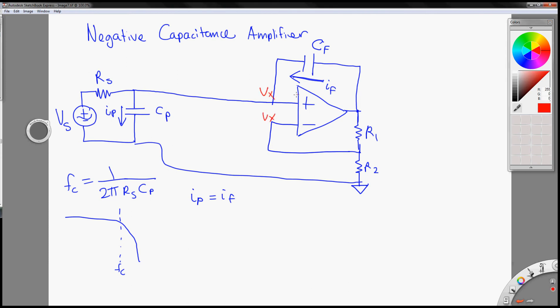Vx on the positive and the negative terminals. So Ip becomes Vx divided by this resistance, which is 1 over j omega Cp.